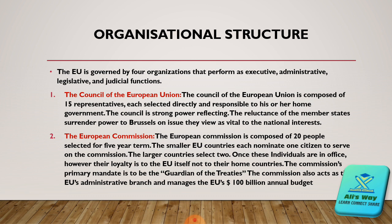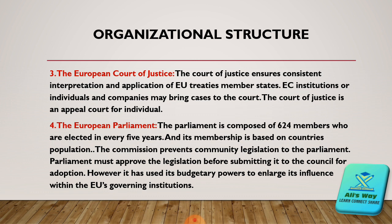The Commission looks after the treaties and especially the EU's annual budget of 100 billion. The third part of the European Union is the European Court of Justice, which ensures consistent interpretation and application of EU treaties among member states. The last part of the European Union is its Parliament. The Parliament is composed of 624 members selected every five years, and its membership is based on each country's population. The Commission presents community legislation to the Parliament, and Parliament must approve legislation before submitting it to the Council for adoption. However, it has used its budgetary powers to enlarge its influence within EU's governing institutions.